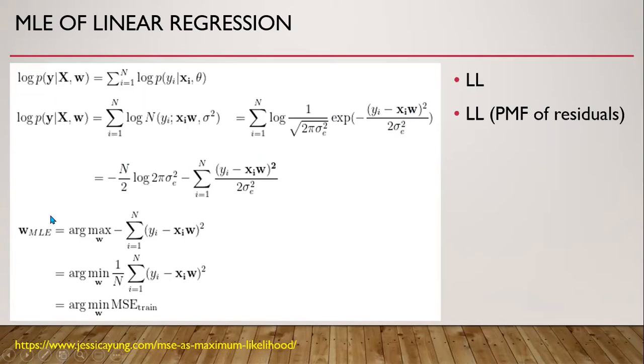So this is after solving this. To maximize the likelihood equation, we need to minimize the mean square error of the training set. This is the same as the mean square error regression equation.